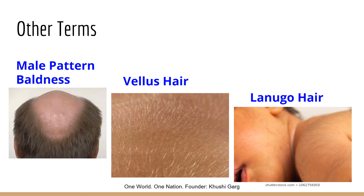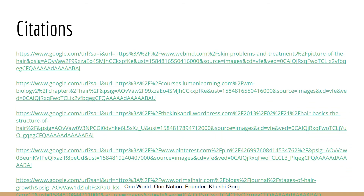There are also some other important hair terms. Male pattern baldness is a genetically driven condition that causes hair loss in males. Vellus is the very thin hair that develops during childhood and covers most of the body, though you can barely see it. Lanugo is the thin, soft hair found on a fetus, and it is shed before birth, being replaced by vellus hair.